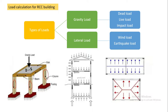We will learn how the load acts. When we apply the load to the slab of a room, it goes to beam, then column, and then footing. So the load path is: slab to beam, beam to column, column to footing. This is the load mechanism.